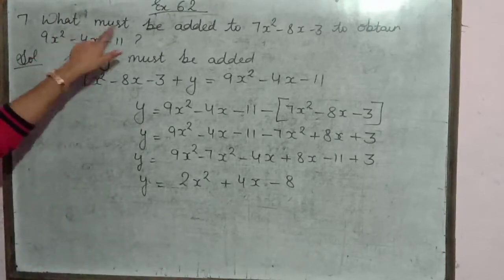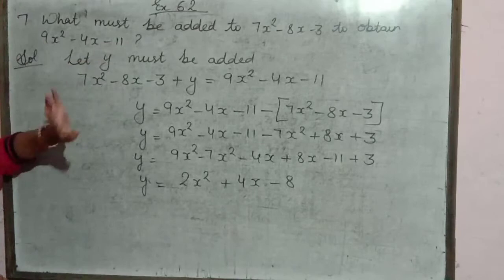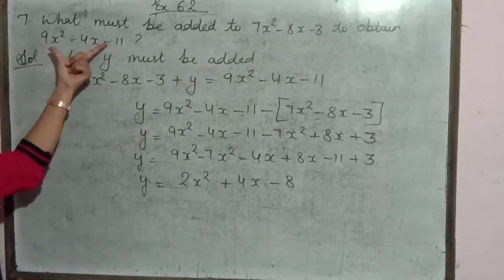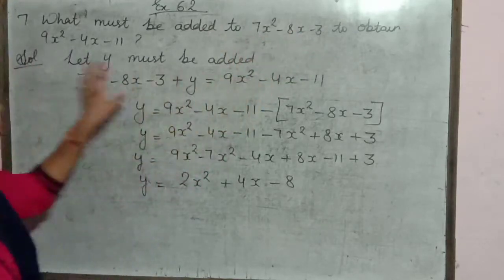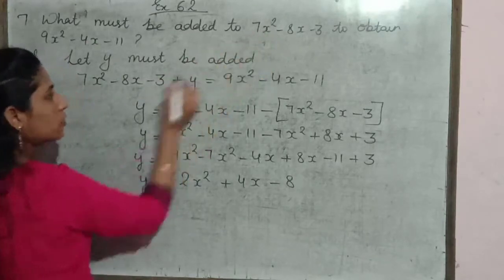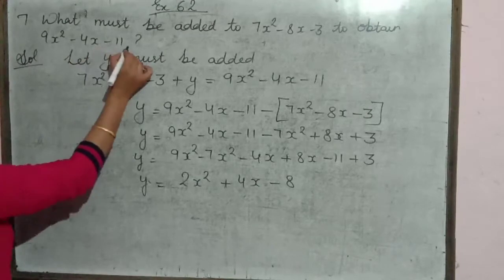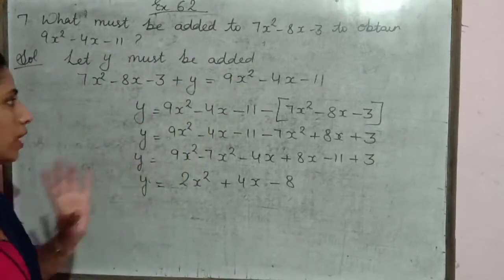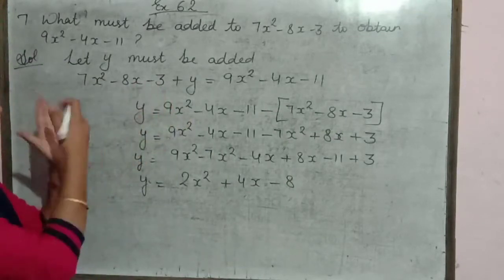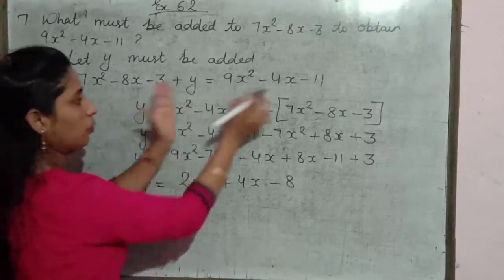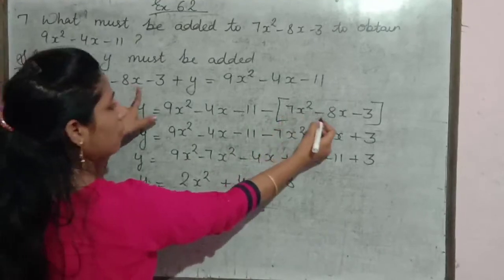Your next question is: what must be added to 7x square minus 8x minus 3 to get 9x square minus 4x minus 11? Is expression mein kya add kiya jaega ki hamein yeh expression prapt ho? Toh humne suppose kar liya that y must be added — ki is expression mein humne y ko add kar diya, toh hamara equal mein aa gaya yeh expression. Toh sabse pehle humne yeh expression write kiya: 7x square minus 8x minus 3, aur usme add kar diya y.